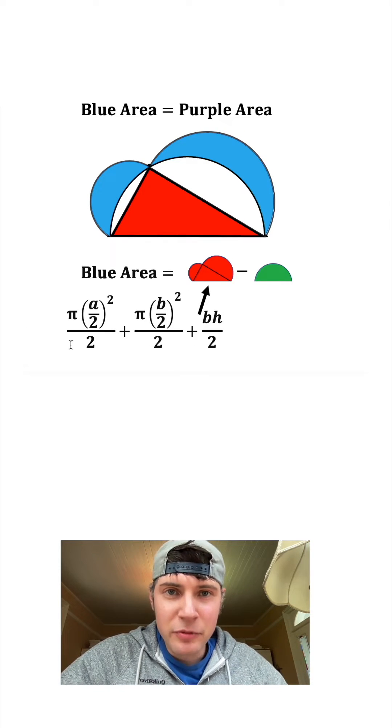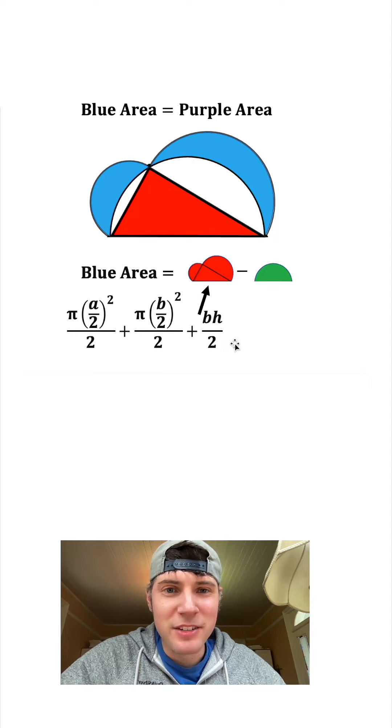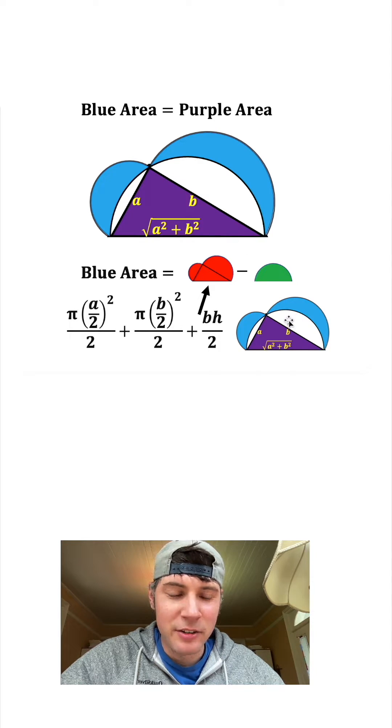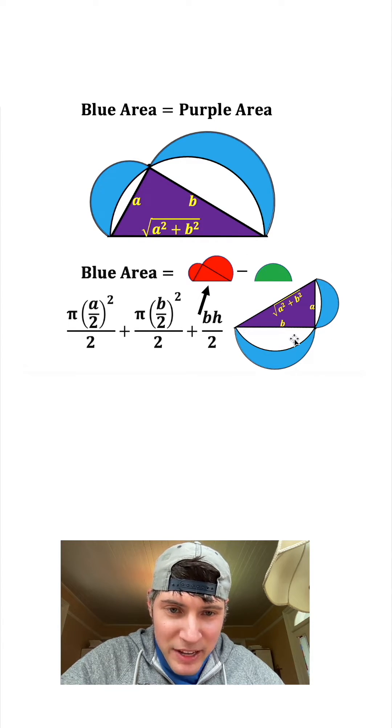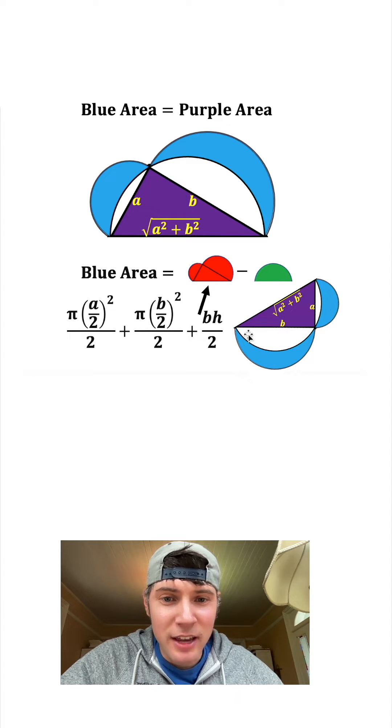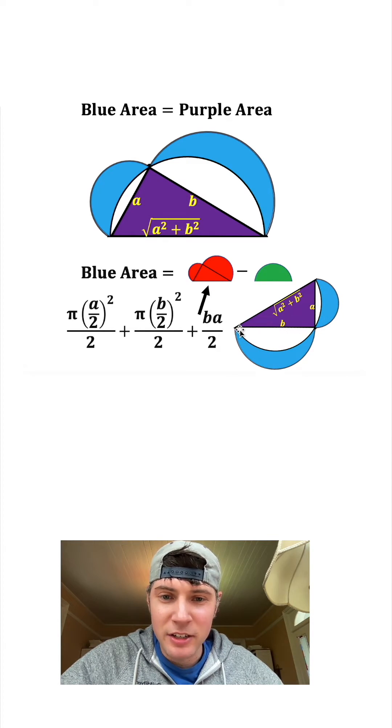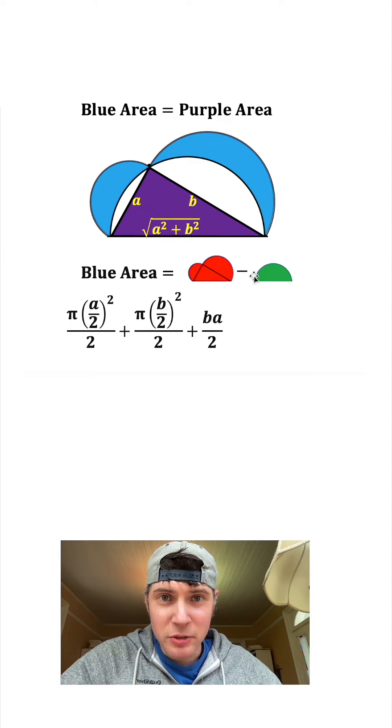Next, we want to add this triangle right here. The formula for the area of a triangle is base times height divided by 2. If I bring this triangle down and flip it over, you can see that the base is B and the height is A. So we'll just leave the B as a B, but the H will change that into an A. Now we have all three of these pieces right here.